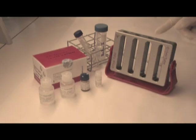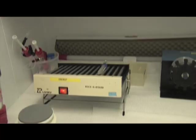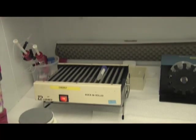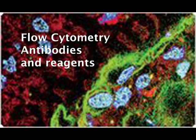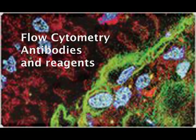You will also need a magnet such as the DynaMag 15, cold isolation buffer. This buffer should be PBS that is calcium and magnesium free supplemented with 0.1% BSA and 2 millimolar EDTA, a mixer that allows for both tilting and rotation, and optional items are flow cytometry antibodies and reagents.